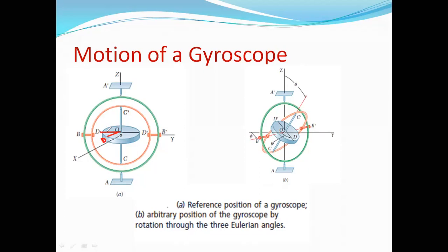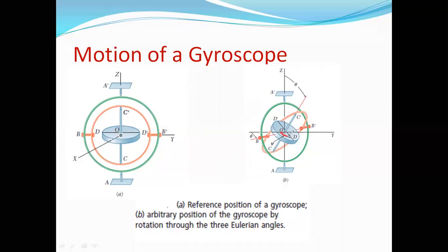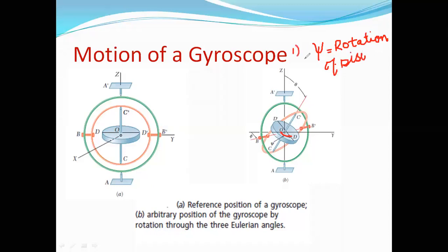The angle that line OD describes as it moves from its original position to its new position is defined by the term psi. So the first angle is angle psi, which describes the rotation of the disk about its axis CC'.